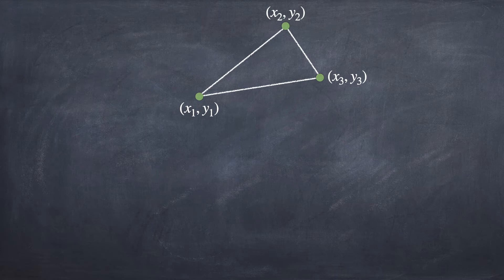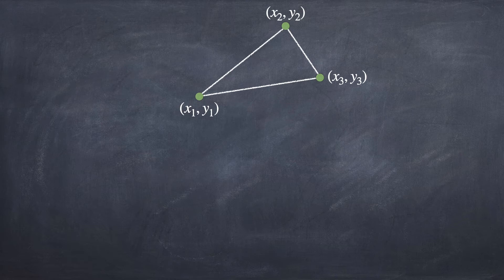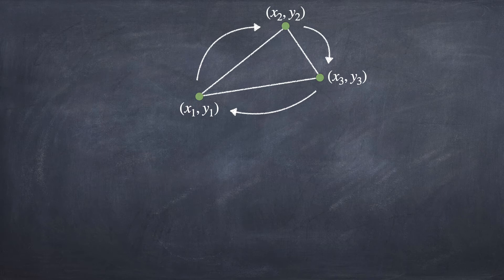To find the area of the triangle, we start with any one of the points, and then write down all the other points in clockwise or anticlockwise direction. Here, I start with the point (x1, y1) and going clockwise. The next point is (x2, y2), followed by (x3, y3), and back to the first point (x1, y1).